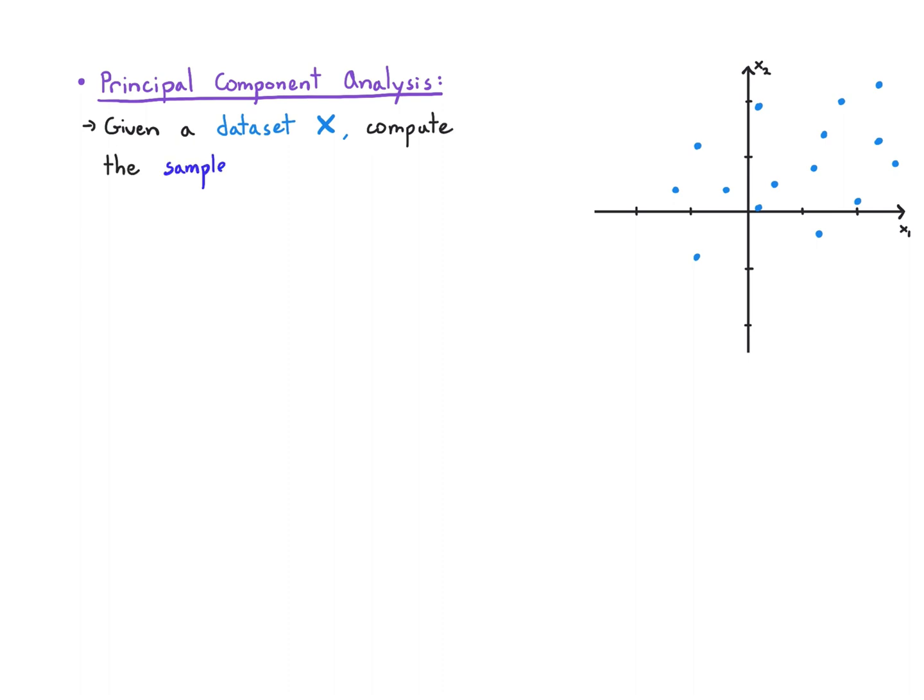Visually what we're going to see from this whole process is a data set x. Here's a data set in 2D and I want to reduce it to 1D because that's as low as I can really do if I start at 2. I'm going to compute the mean vector, turns out to be here.